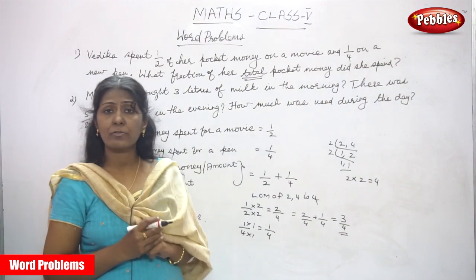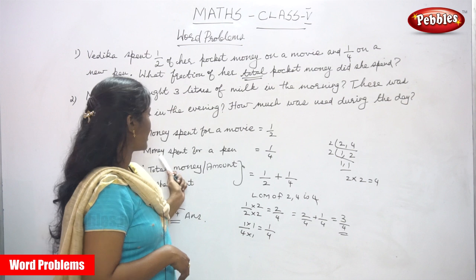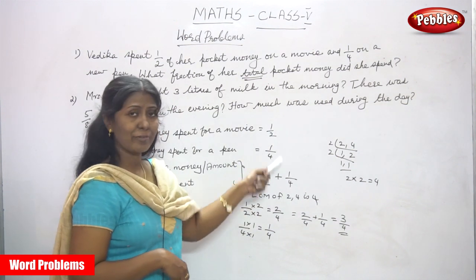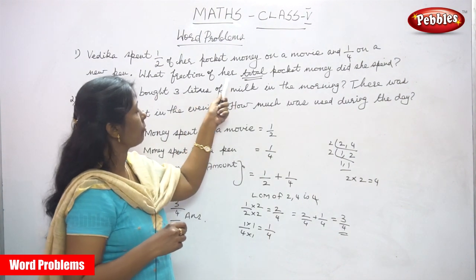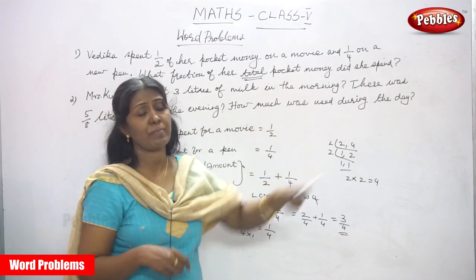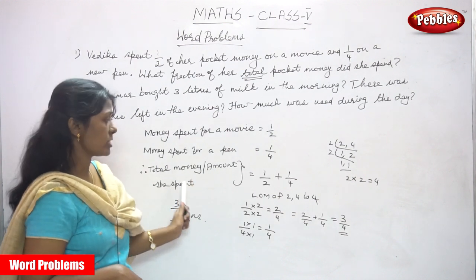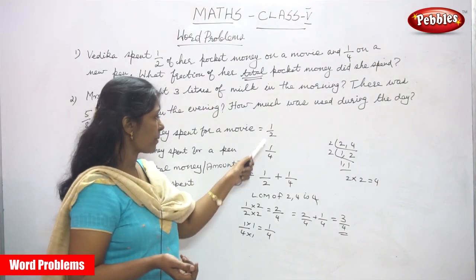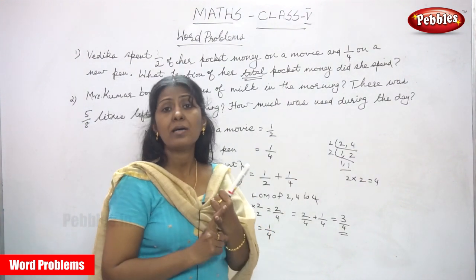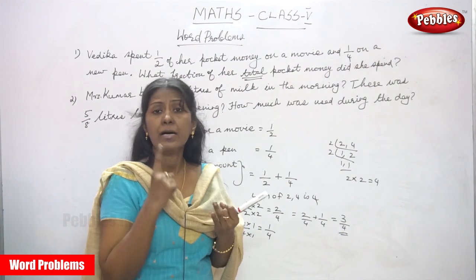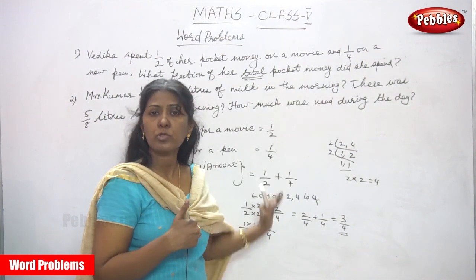So this is the answer for the question. Let me repeat: money spent for a movie is 1 by 2, money spent for a pen is 1 by 4. They ask: what fraction of a total pocket money did she spend? Total is the clue for addition, so we add 1 by 2 and 1 by 4. You must first read and understand the question, then solve the sum.